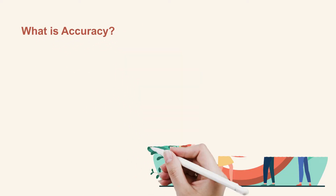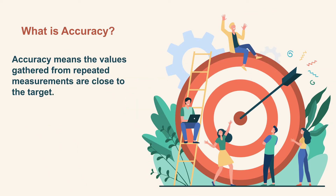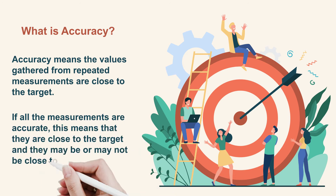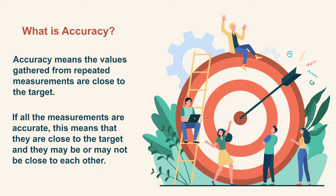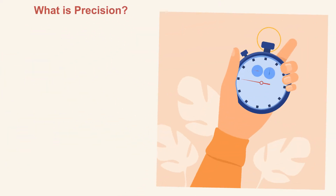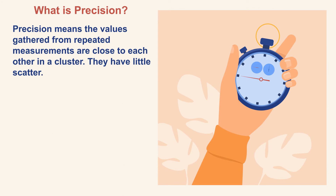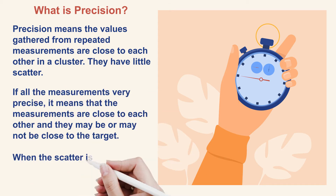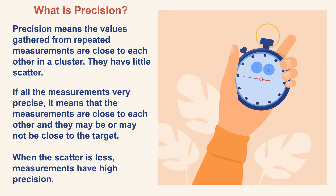Accuracy means the values gathered from repeated measurements are close to the target. If all the measurements are accurate, they are close to the target and may or may not be close to each other. Precision means the values gathered from repeated measurements are close to each other in a cluster — they have little scatter. If all the measurements are very precise, they are close to each other and may or may not be close to the target.